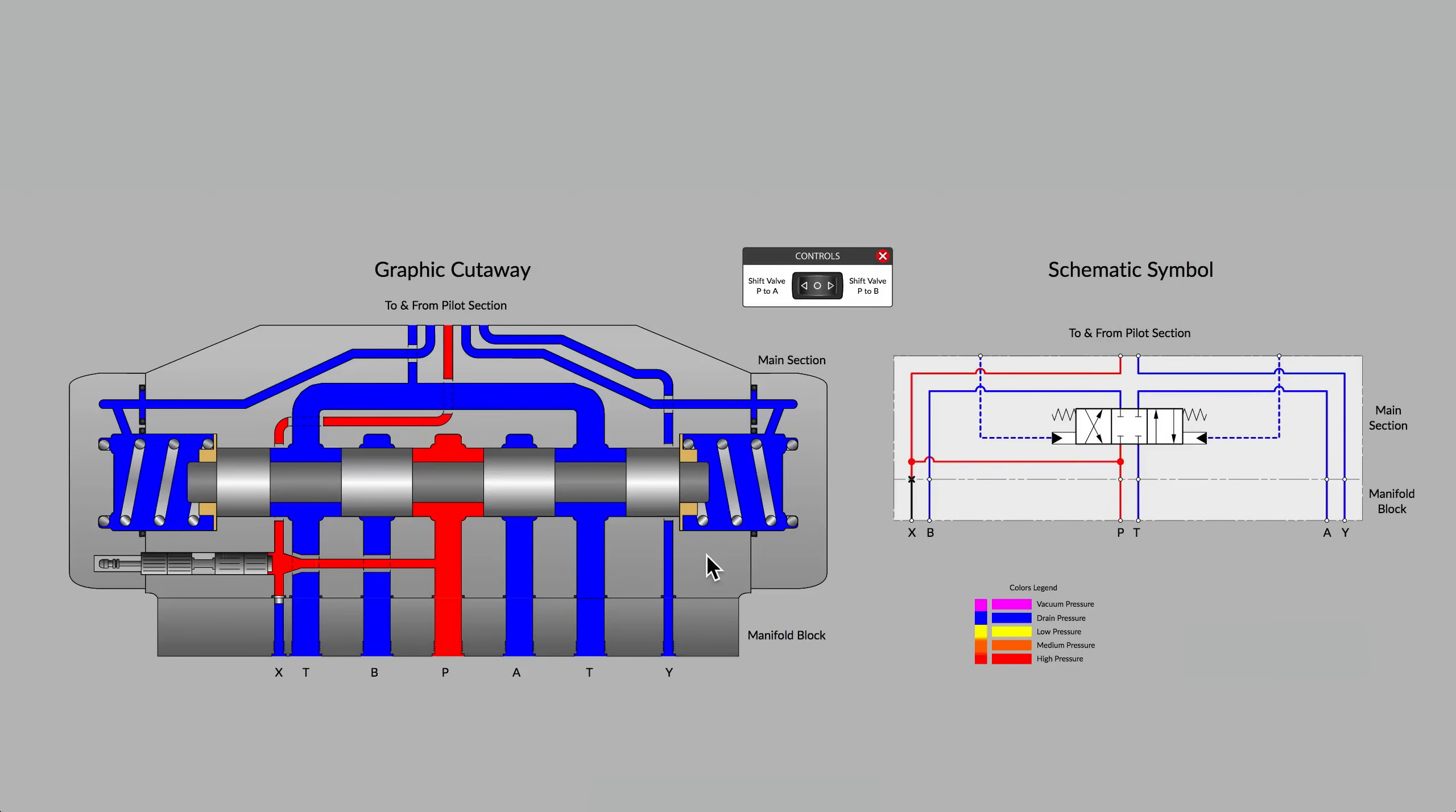The question sometimes asked is why not just install solenoids at both ends of the main spool. The reason that is not done is that the size of the winding would be very large and the amount of electrical current required to create the magnetic force to move such a large spool would be very inefficient. So pilot pressure is brought to bear on the right-hand pilot head or the left-hand pilot head to move the valve. But in simple terms, it is just a basic spool-type directional control valve.